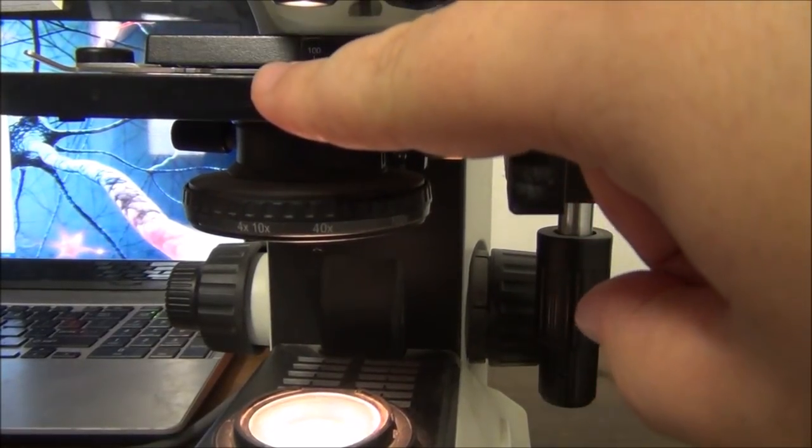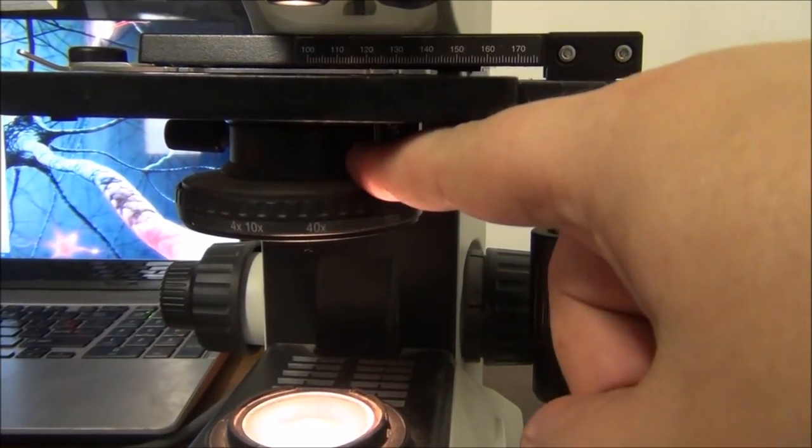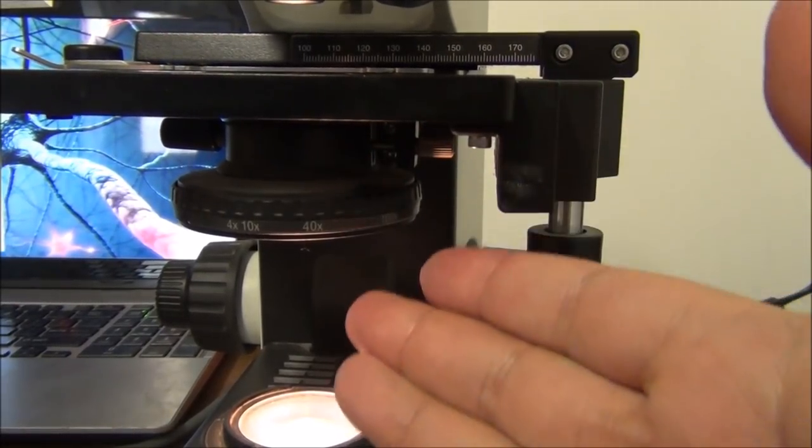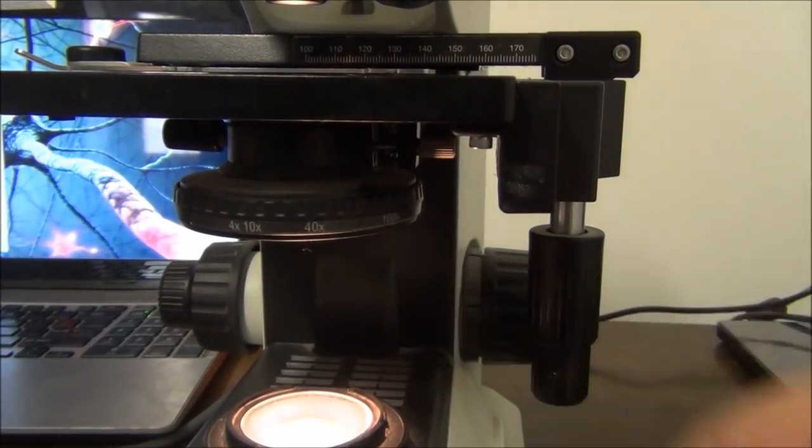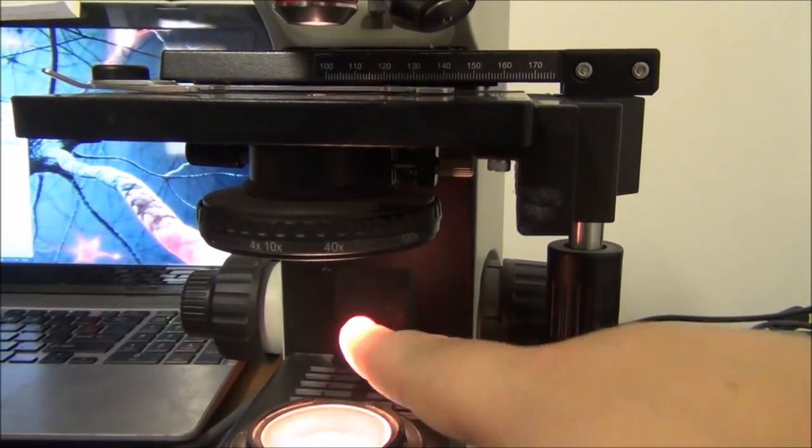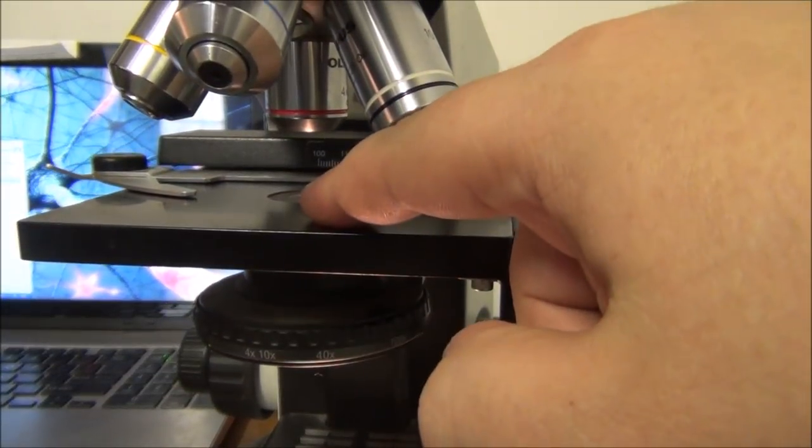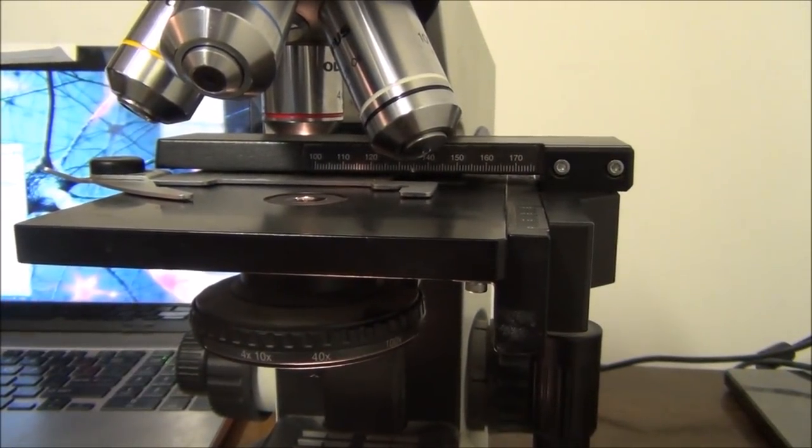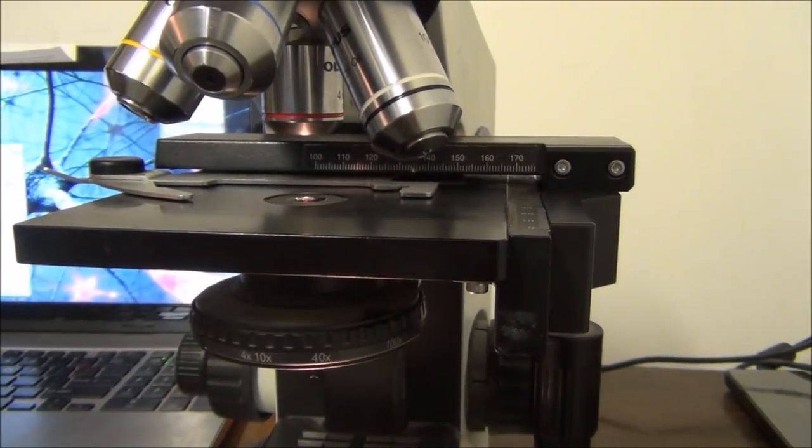Just below the sample stage is the microscope's condenser. A condenser can be anything from something like what you see here, an ABBA condenser, to a simple hole in the stage to let light through. Regardless, what we're going to do is block the light from getting through the middle of the condenser while letting it get through around the edges.